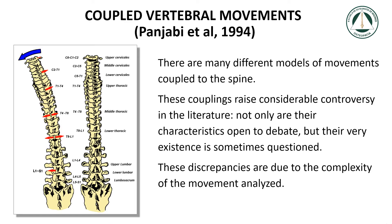Coupled vertebral movements — Punjabi et al., 1994. There are many different models of movements coupled to the spine. These couplings raise considerable controversy in the literature. Not only are their characteristics open to debate, but their very existence is sometimes questioned. These discrepancies are due to the complexity of the movement analyzed.